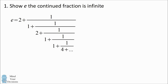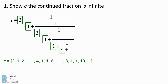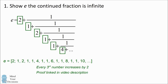We can write this continued fraction representation more simply by listing only the key numbers: 2, 1, 2, 1, 1, 4. It turns out that E has the continued fraction representation starting with 2, 1, 2, then 1, 1, 4, 1, 1, 6, 1, 1, 8, 1, 1, 10, and so on — every third number increases by 2. This was proved by Euler, and a link to the proof is in the video description. The representation is infinite because every third number keeps increasing by 2.